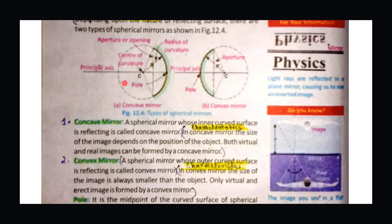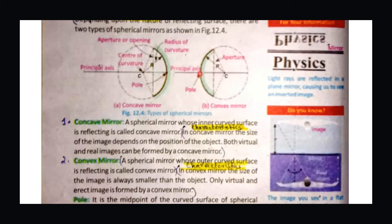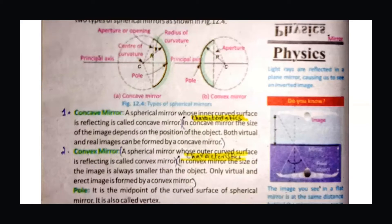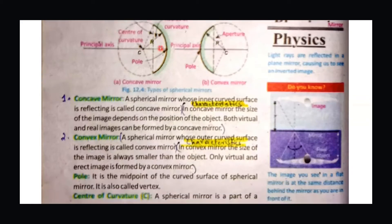There are some terms related to spherical mirrors that you can see in the figure. The first term is the pole, denoted by capital P. The pole is the midpoint of the curved surface — basically the central portion of the mirror. This midpoint of the mirror is known as the pole of the concave and convex mirror, and it is also known as the vertex.